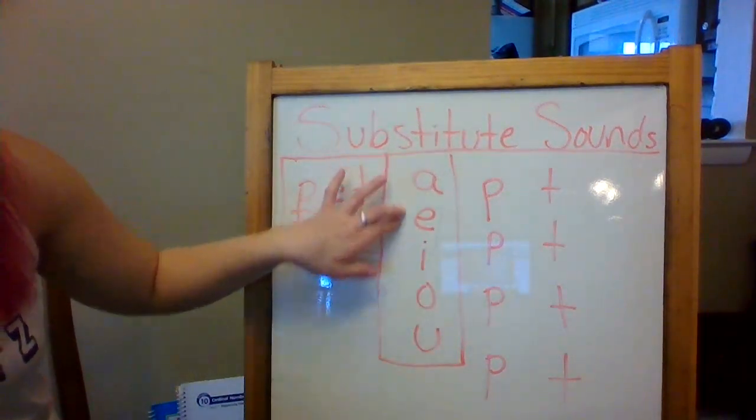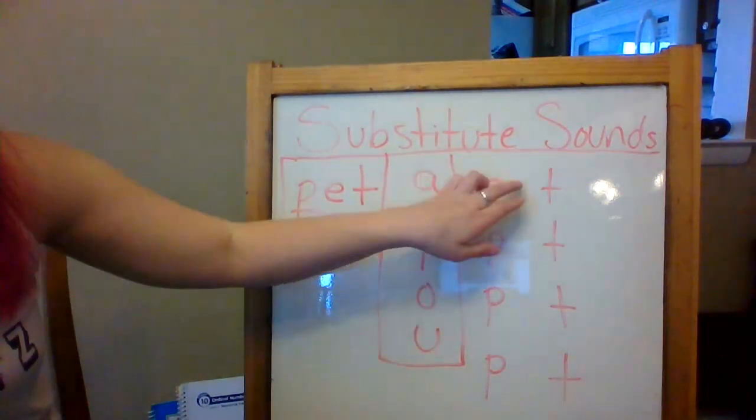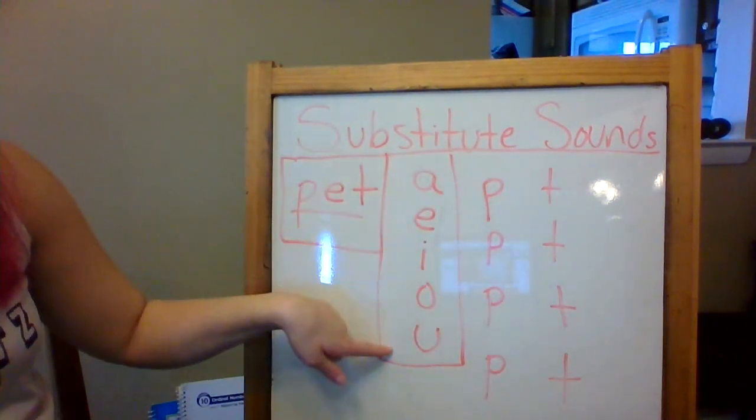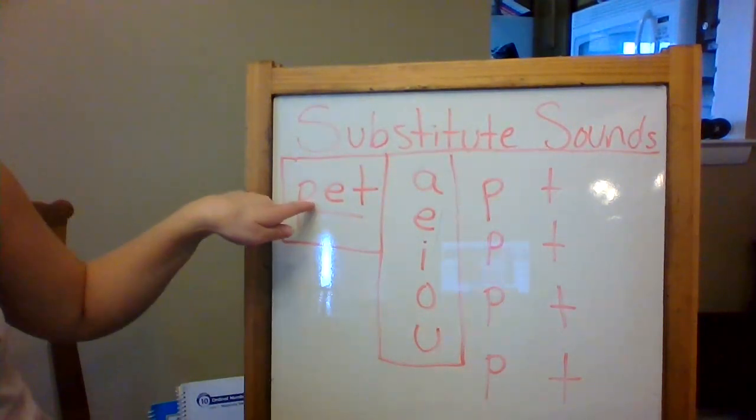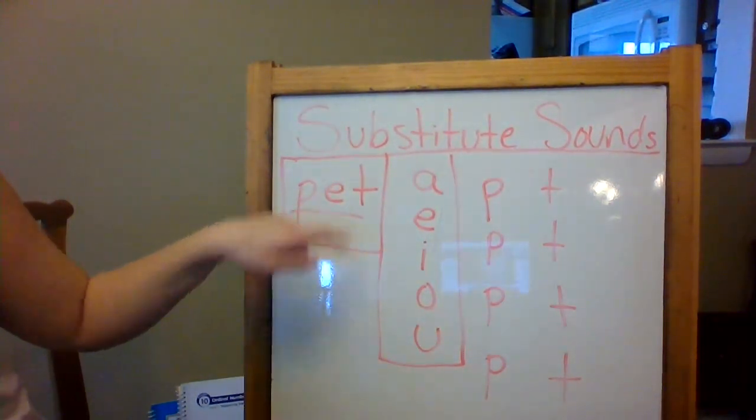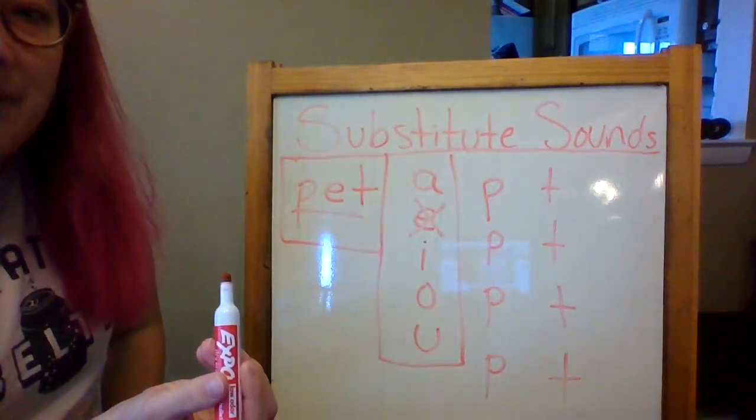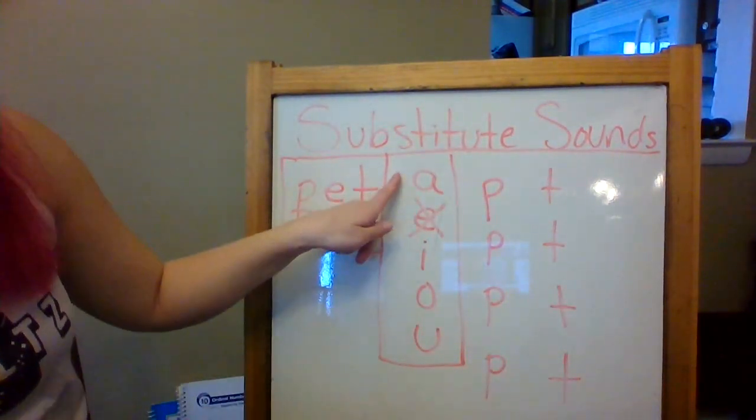So today we're gonna take all the different vowel sounds, and we're gonna switch out the middle of the word pet with all the different vowels. So p-e-t has an e in it. So we're not gonna switch it out with e because it already has an e, right? So we're gonna start with our first vowel, which is a.